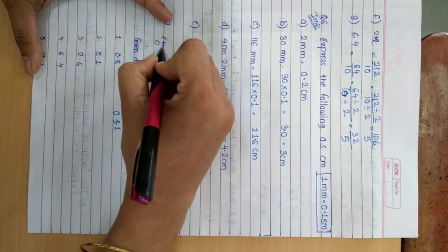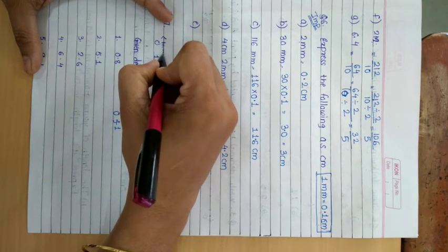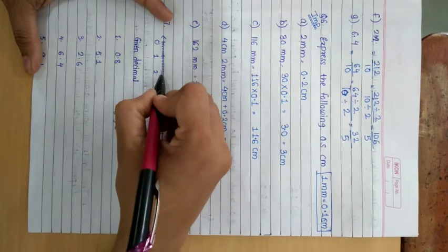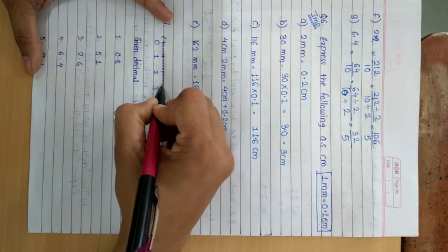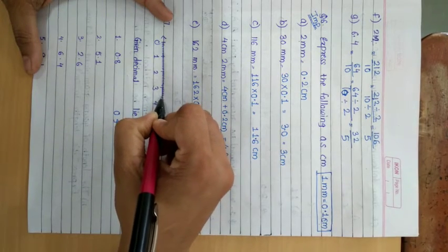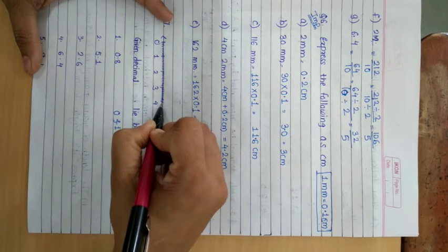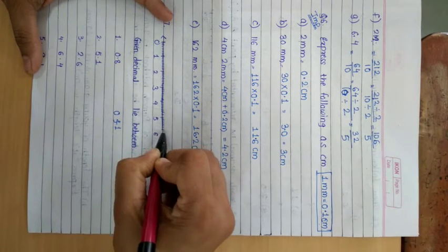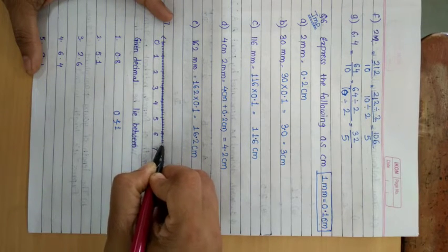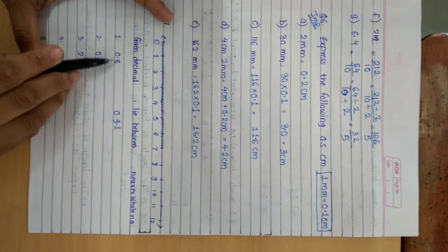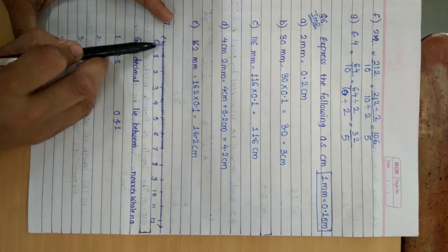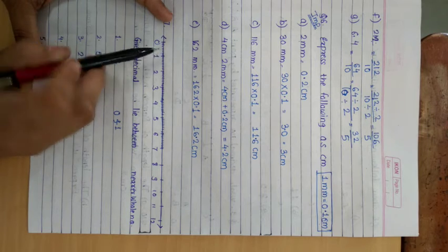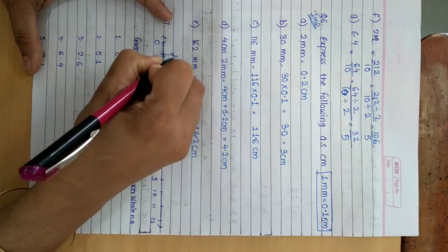I draw 9 lines to make 10 equal parts between each unit. So the first line is 0.1, then 0.2, 0.3, 0.4, 0.5, 0.6, 0.7, and this line is 0.8.